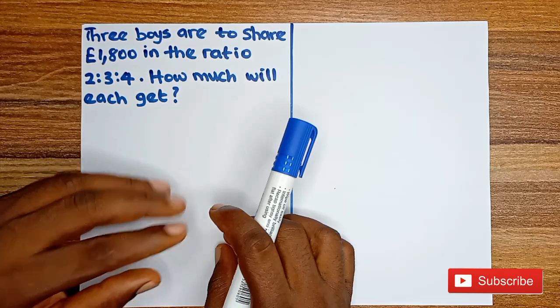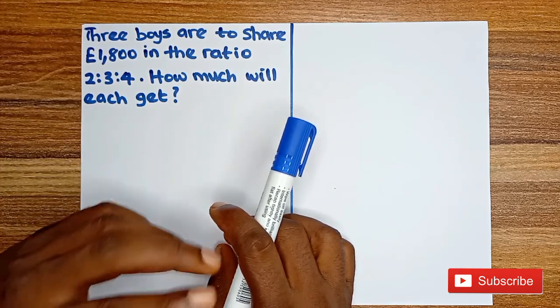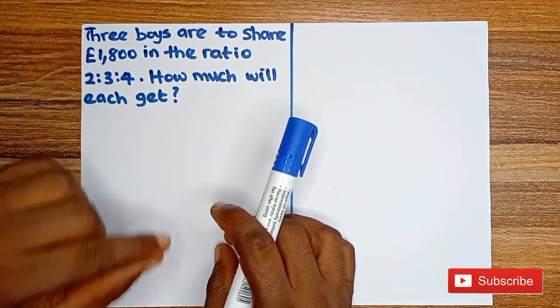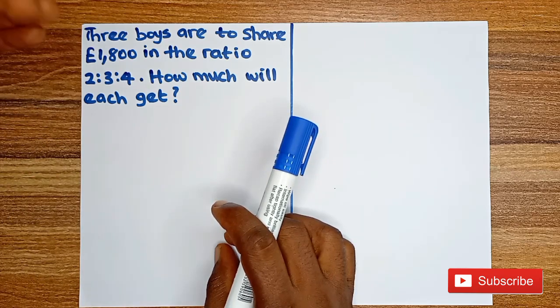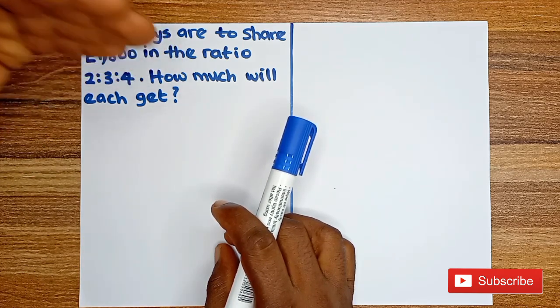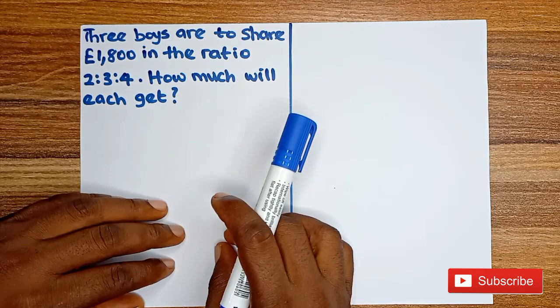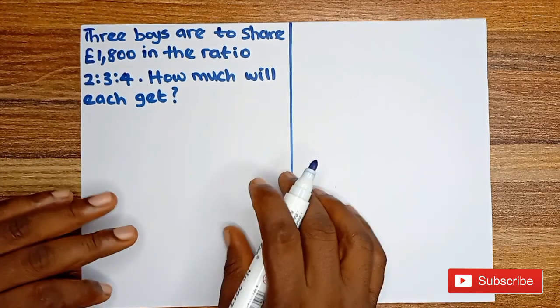So we have three boys in this question sharing £1,800. How much will each of them get? For us to have an idea of this, we are going to add the ratios that we have to get the total ratio. That's the first step we take.